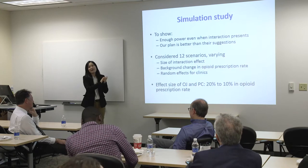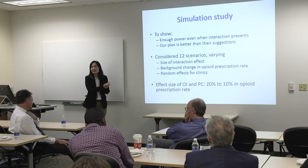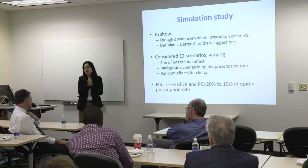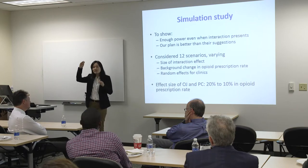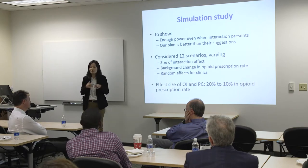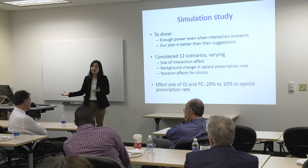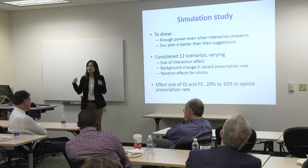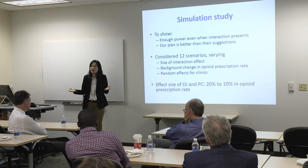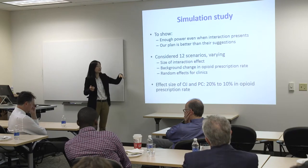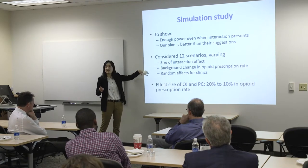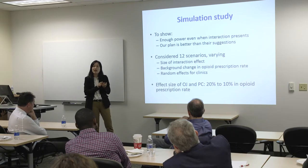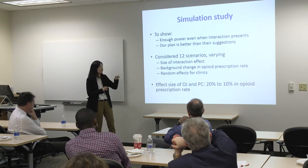A simulation study is something you do when you don't have a closed-form solution for your power calculation. Basically, you assume some reality and then use a computer to generate very probable data that you may observe in reality. We have to assume some reality which we don't know for sure. So I considered 12 different realistic scenarios, varying all these things — because we don't know how big the interaction effect will be, I used two different values. We also don't know how fast the opioid prescription rate will decrease, so I used different values for that as well.